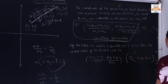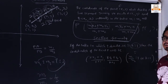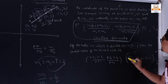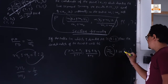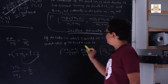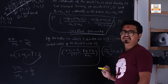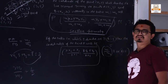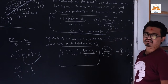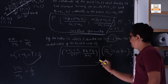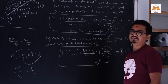Sometimes the ratio is given like k, where k = m1/m2. In that case, the formula becomes: x = (k·x2 + x1) / (k + 1) and y = (k·y2 + y1) / (k + 1). So if ratio is given as m1:m2, we use the first formula; if ratio is given as k:1, we use this second formula. You need to remember both — this is the section formula.